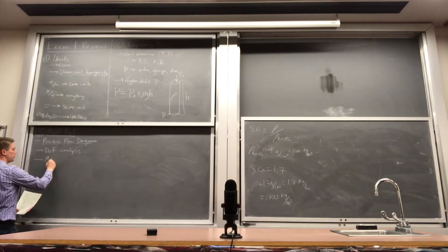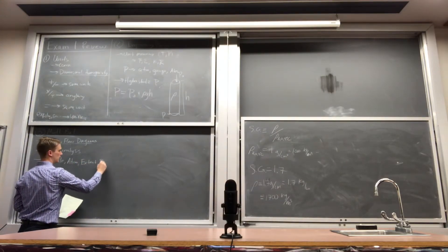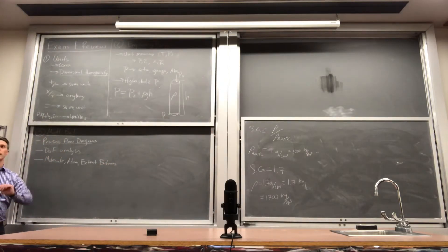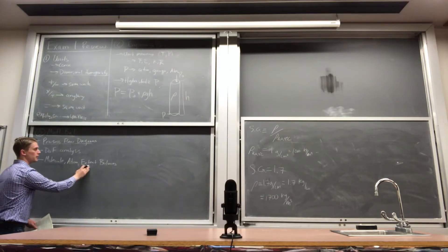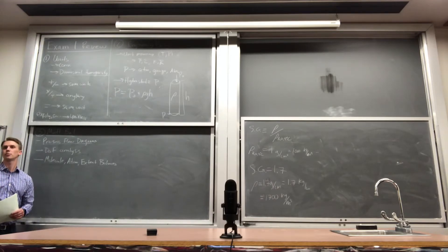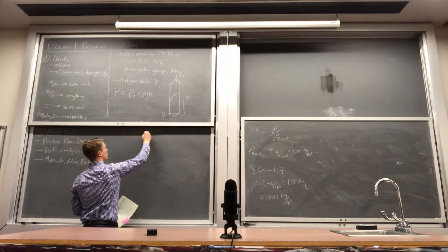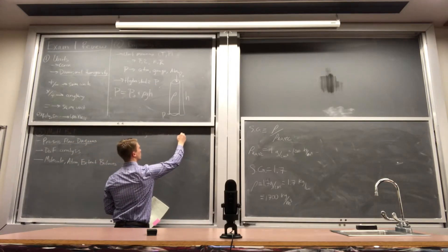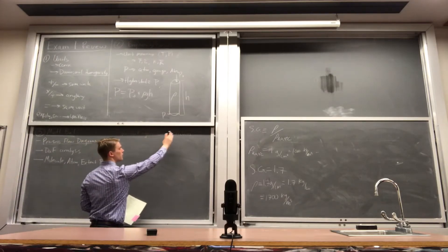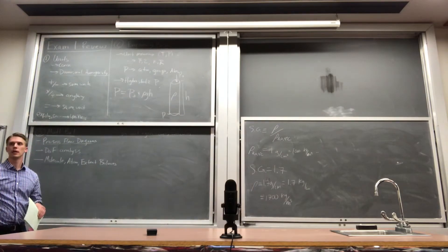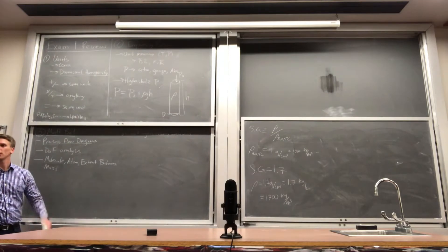We covered molecule, atom, and extent of reaction balance strategies. The molecule balance is typically for a non-reacting system, while atom balance and extent of reaction are used for reacting systems. The general balance equation is: in minus out plus generation minus consumption equals accumulation. For a non-reacting open steady-state process, there's no generation, no consumption, and no accumulation. We could also use a mass balance — mass in, mass out.